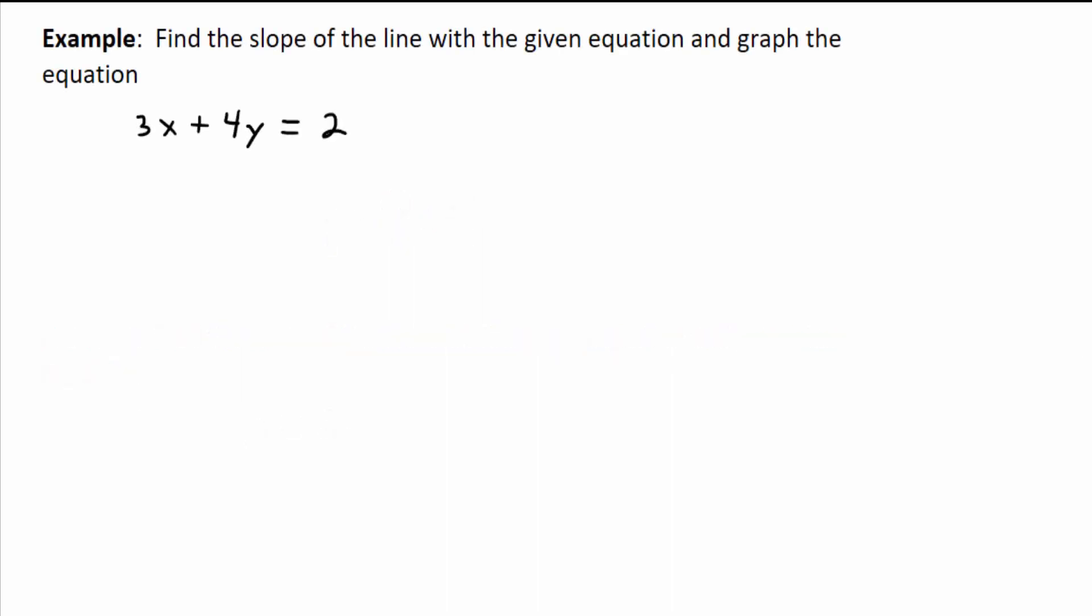In this next example, we want to find the slope of the line with the given equation and graph the equation, it says. Okay, so we have 3x + 4y = 2. What do I have to do to identify the slope? What's my ultimate goal, though? You're not wrong. Isolate the y. So somebody said subtract the 3x? Definitely. But our ultimate goal is to get y by itself, right? So let's keep the big picture in mind. That's why we're subtracting the 3x from both sides.